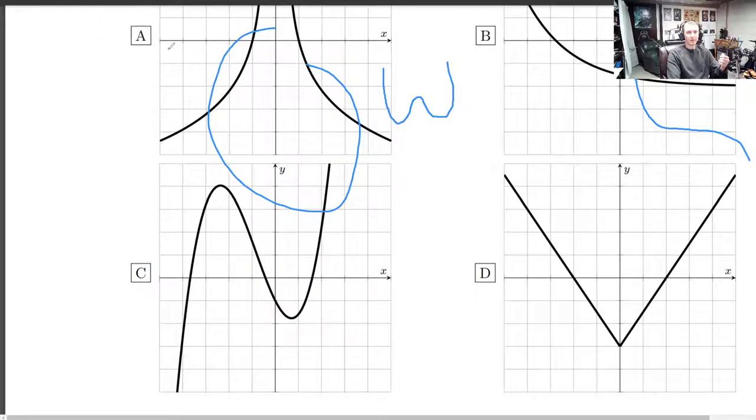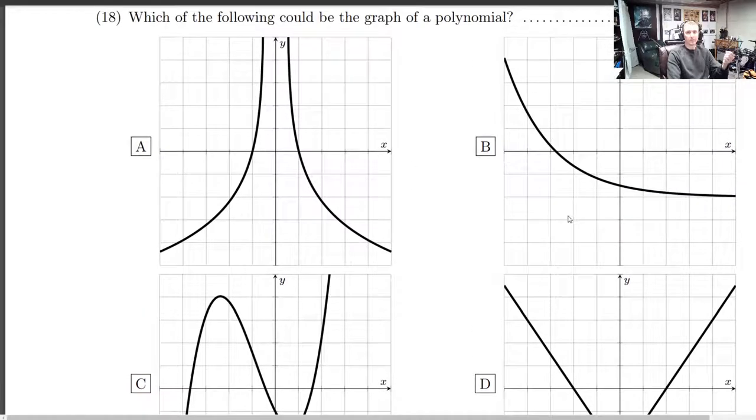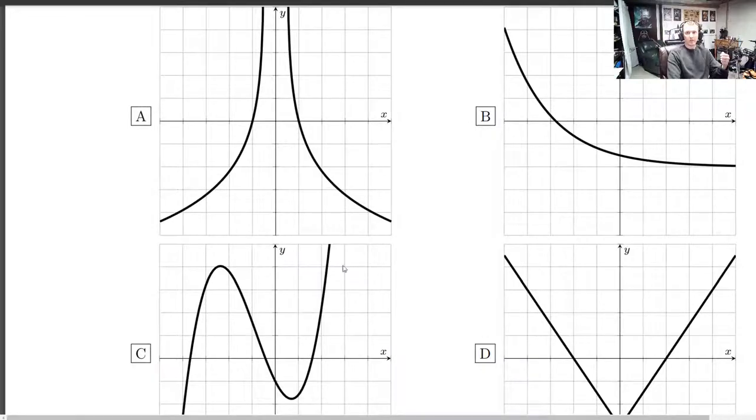The reason that one can't be is because that's a really sharp point. That's called a cusp. Polynomials don't have cusps. So we can rule this one out safely. And if we assume that the window is showing you what you need to be shown, showing you the necessary characteristics, then the best choice is C.